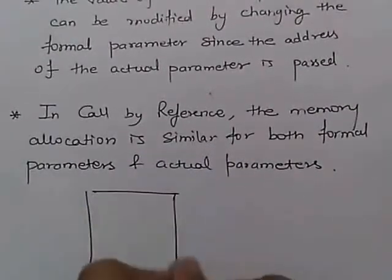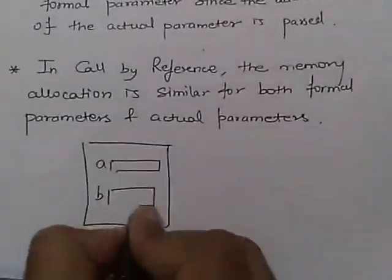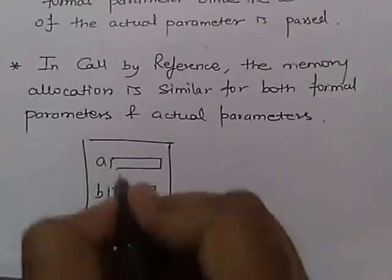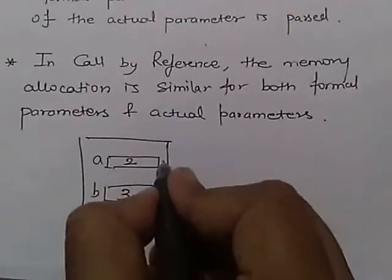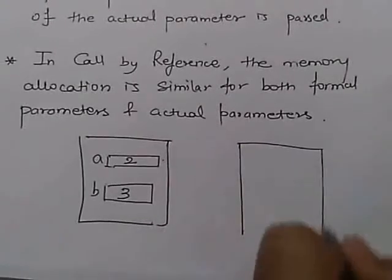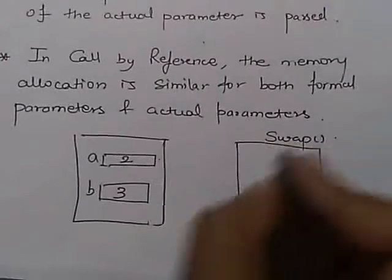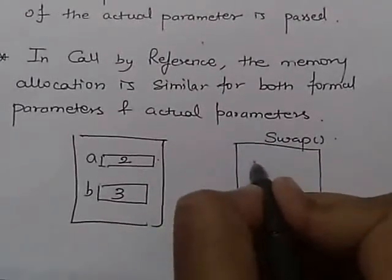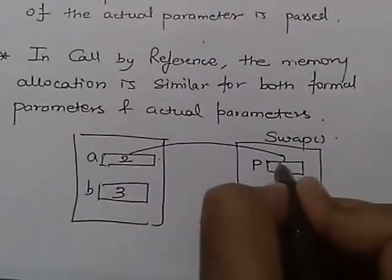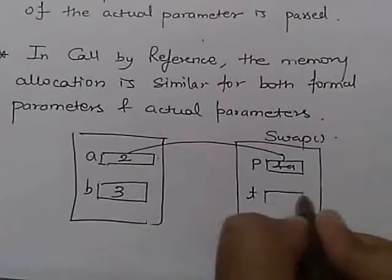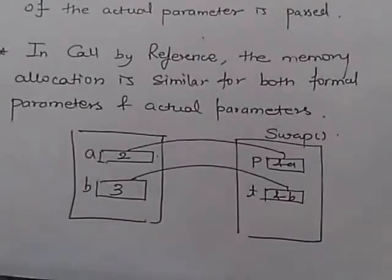Suppose we have two variables A and B. The value stored in A is 2 and the value stored in B is 3, and these values are passed to a swap function. Here we have a pointer P, and the address of A is given to it. This is the call by reference mechanism.